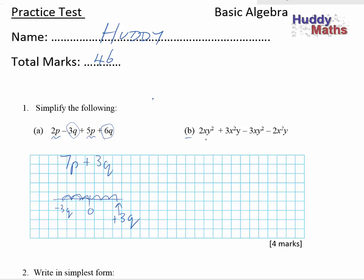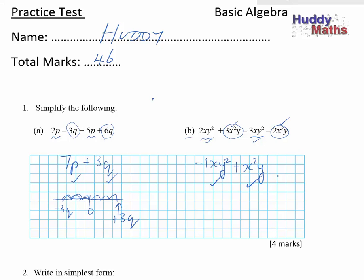Let's look at part b. We've got an xy squared term — there's another one — and that's 2 take 3, which would be negative 1xy squared. You could leave out the 1; we quite often do that. And then the other ones are x squared y's — the square is on the x, not on the y. So they're different. You've got 3 take 2: 3 dogs take 2 dogs is 1 dog, so this is x squared y. For marking: 1 mark for each term. You don't need the 1 in front, but you must have the negative.